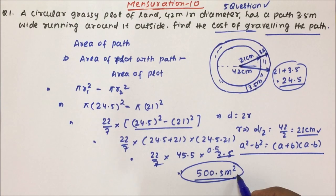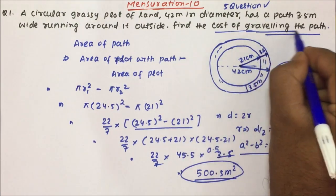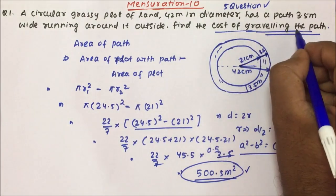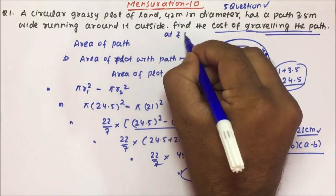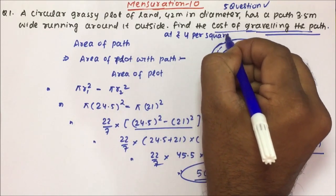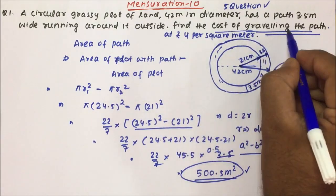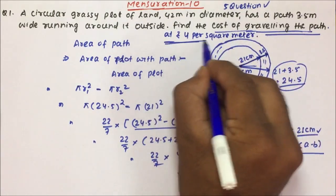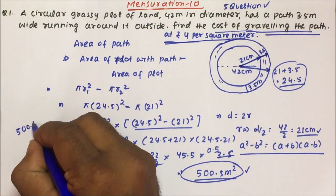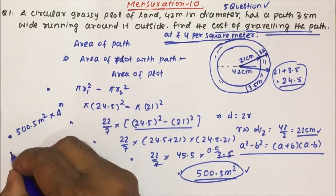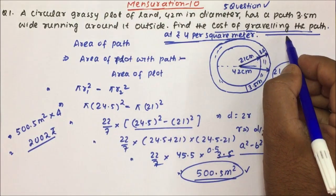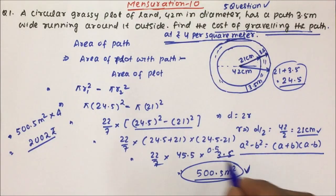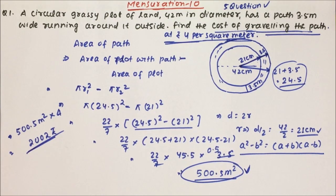Now, what is the cost of graveling the path? We add the condition: find the cost at rupees 4 per square meter. Since the area is 500.5 m² and the rate is ₹4 per m², the total cost is 500.5 × 4 = ₹2002. So you need ₹2002 to gravel the path.